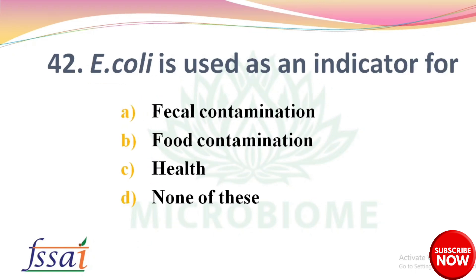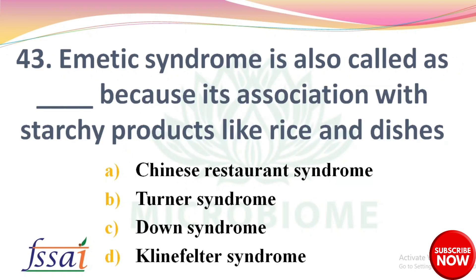Next: Escherichia coli is used as an indicator for — options: fecal contamination, food contamination, health, none of these. The right answer is option A, fecal contamination. Next: Emetic syndrome is also called dash because of its association with starchy products like rice dishes — options: Chinese restaurant syndrome, Turner syndrome, Down syndrome, Klinefelter syndrome. The right answer is option A, Chinese restaurant syndrome.